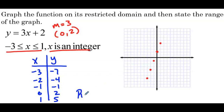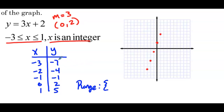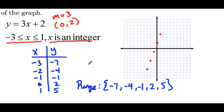To state the range of this function, we can simply list the y values from least to greatest. We've already done that in the table: negative 7, negative 4, negative 1, 2, and 5. That's the simplest way to express it — just list the outputs in this domain. So the range is {-7, -4, -1, 2, 5}.